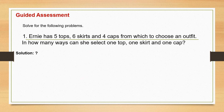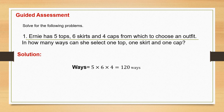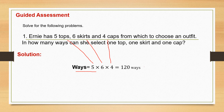Another problem: Ernie has 5 tops, 6 skirts, and 4 cups from which to choose an outfit. In how many ways can she select 1 top, 1 skirt, and 1 cup? By using the Fundamental Counting Principle: 5 times 6 times 4 equals 120 ways — 5 for tops, 6 for skirts, and 4 for cups. All in all, there are 120 ways.